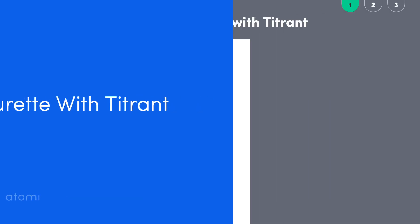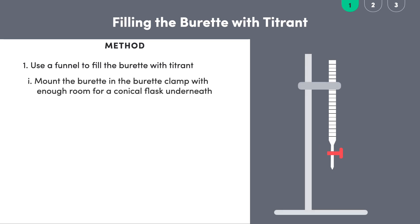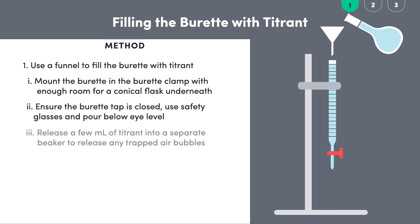Our first job is to fill the burette with titrant which we deliver into the conical flask. We mount the burette in the burette clamp attached to a ring stand with enough room for a conical flask underneath. To avoid chemical spills we check that the tap is closed and use a funnel to help fill the burette with the titrant, sodium hydroxide in this case. Generally we fill to almost the top of the burette and then we open the tap to release a few milliliters of the titrant into a separate beaker. This is to release any trapped air bubbles which may be lying at the bottom of the standard solution.